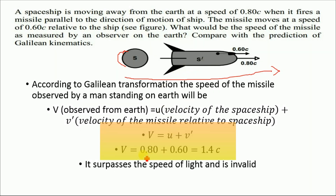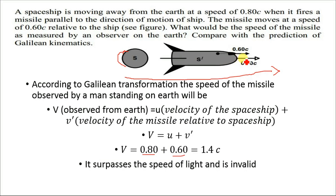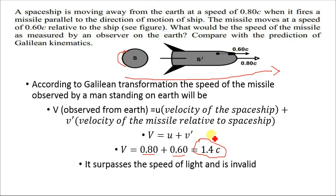We know the velocity of the spaceship is 0.80c and the velocity of the missile is 0.60c. The sign is positive because both the spaceship and the missile are moving away from the Earth. If the missile were fired toward the Earth, we would subtract 0.60 from 0.80. But here both are moving away, so we add both velocities, giving the velocity of the missile observed from Earth as 1.4c.